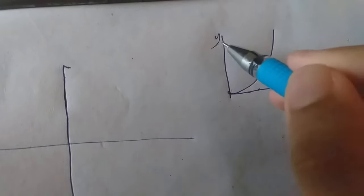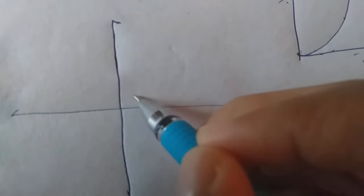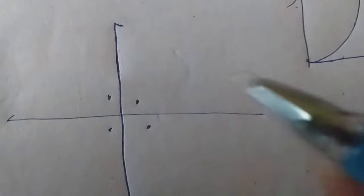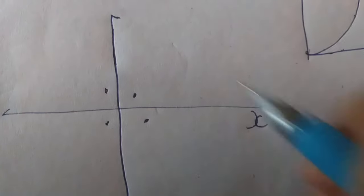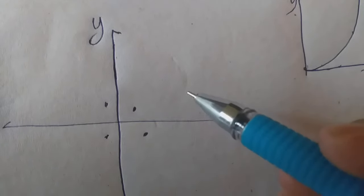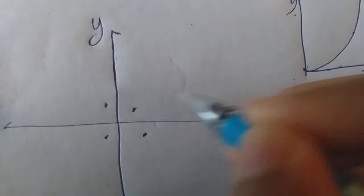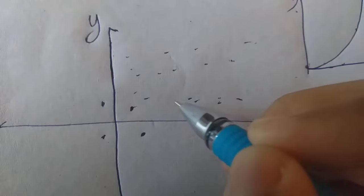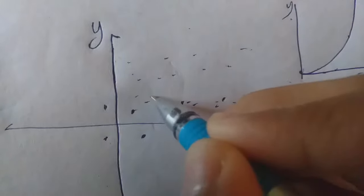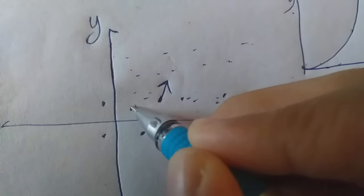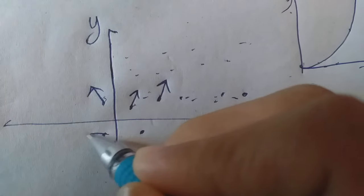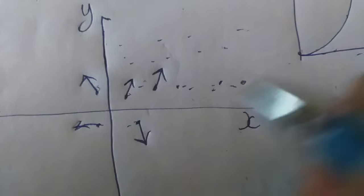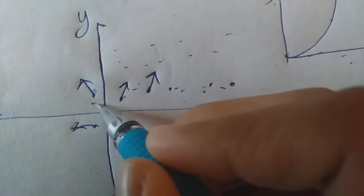Here we have one input and one output. We have a vector in the x-axis. Now we have a vector. Now we have a vector and a charge.